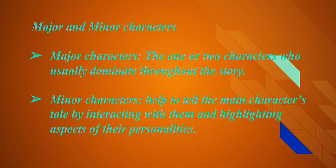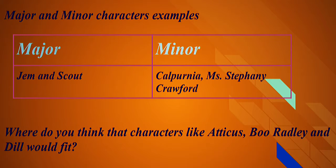Now let's focus on the major and minor characters. The major character in the story is one or two characters who usually dominate throughout the story. The minor character helps the main character's tale by interacting with them and highlighting aspects of their personality. We can conclude, based on dominance, that Jem and Scout are major characters in the story, while Calpurnia and Miss Stephanie Crawford are minor characters.